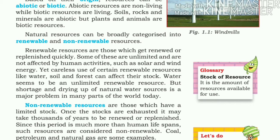Based on their origin, resources can be classified as abiotic or biotic. Abiotic resources are non-living while biotic resources are living. Soils, rocks, and minerals are abiotic resources, while plants and animals are biotic resources.